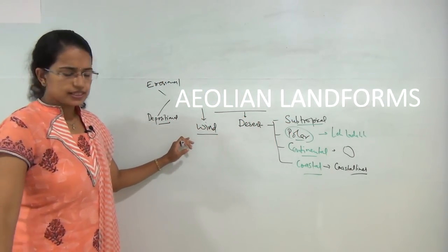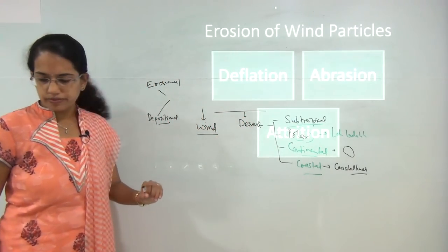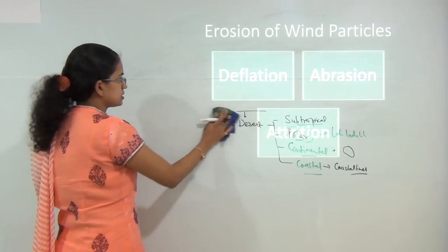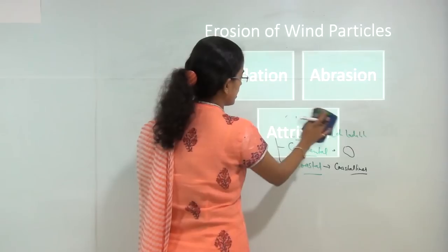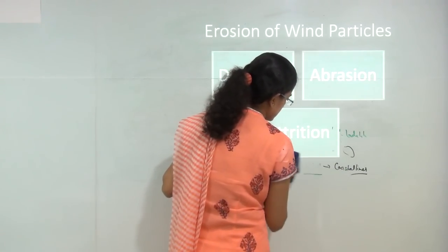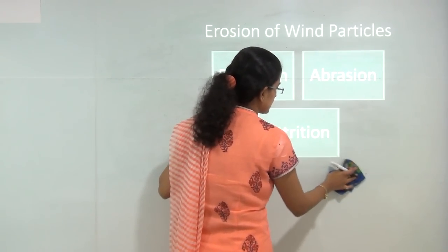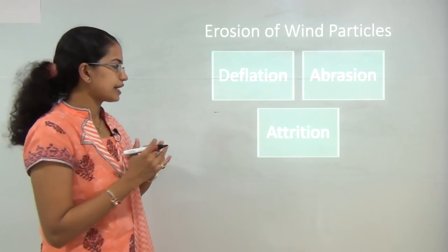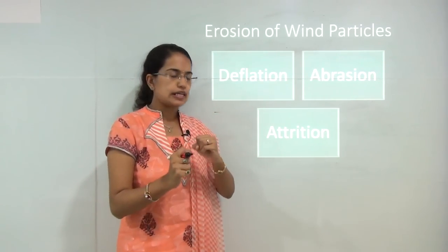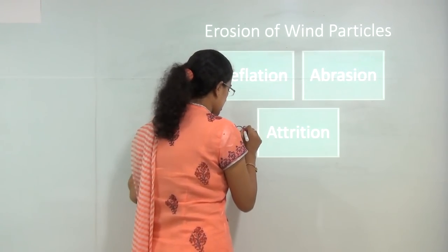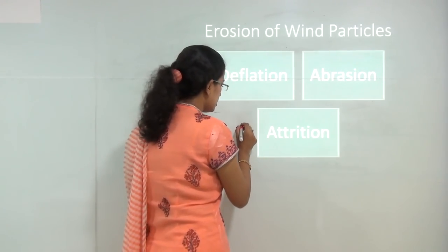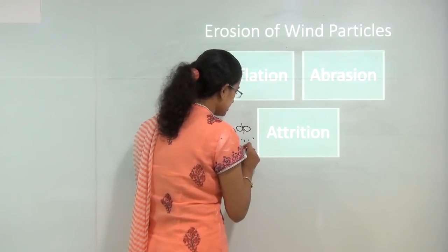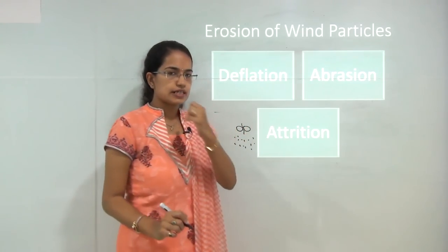When we start with understanding wind movements, there are three basic types of wind erosion. The first is deflation, then abrasion, and then attrition — which we have already discussed in glacial landforms. Simply put, attrition is when two particles rub against one another and break into smaller particles.